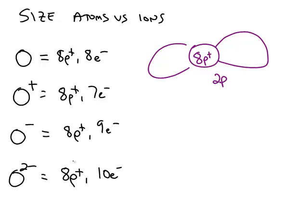All of them obviously have eight protons. The difference is the number of electrons. So we're talking about the 2p orbital is the last orbital being filled in all cases, and the number of protons in the nucleus is the same in all cases.